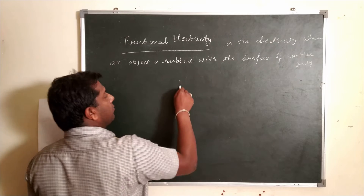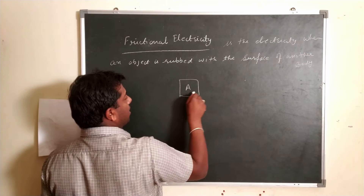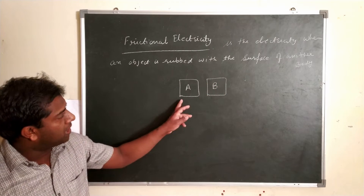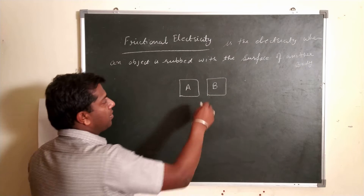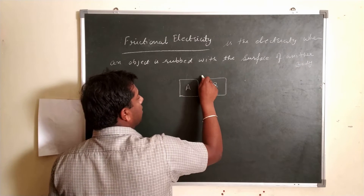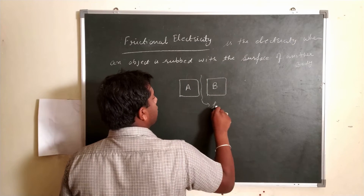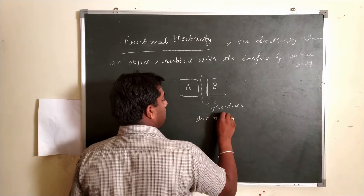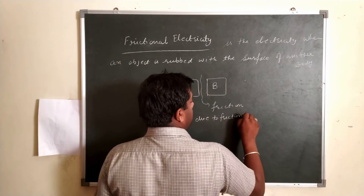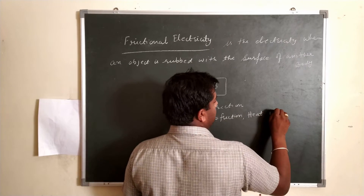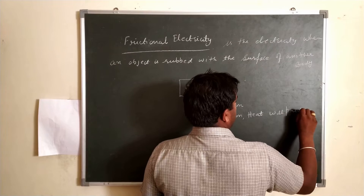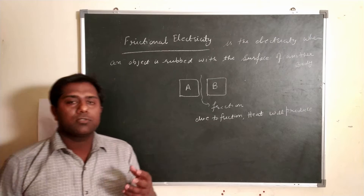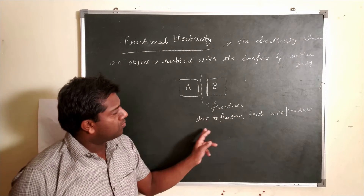Suppose we have two objects — object A and object B. Now we will rub object A on the surface of object B. So here there will be friction. Due to friction, heat will be produced.